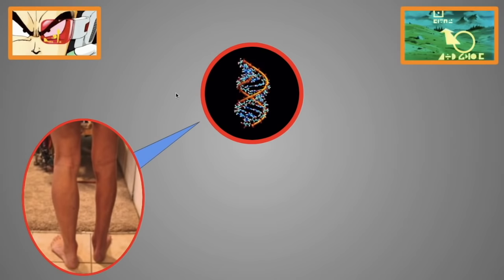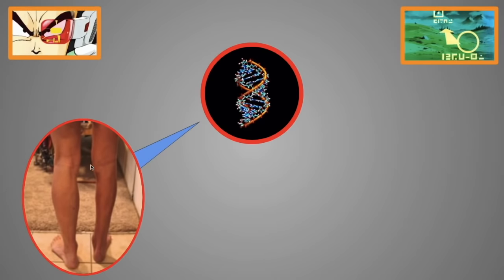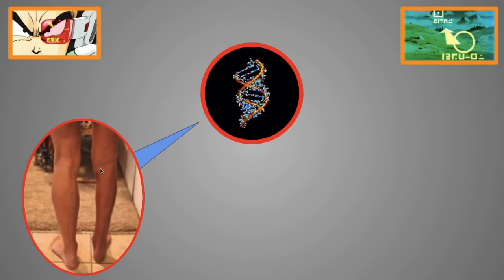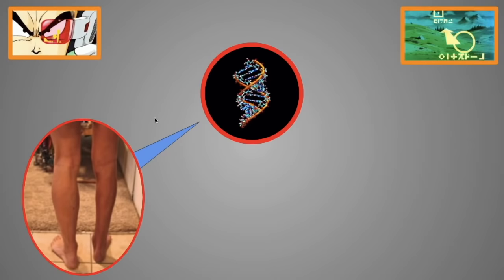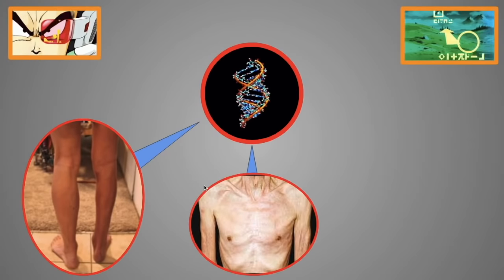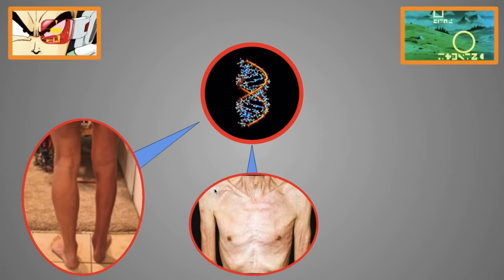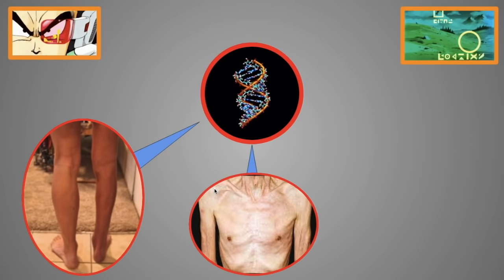Here are some examples of what happens when your myostatin levels are too high. For example, the reason why your legs shrink when you put them in a cast or you immobilize for a long time is because myostatin levels go up. The reason why HIV and cancer patients lose a ton of muscle so fast is also because their myostatin levels go up.